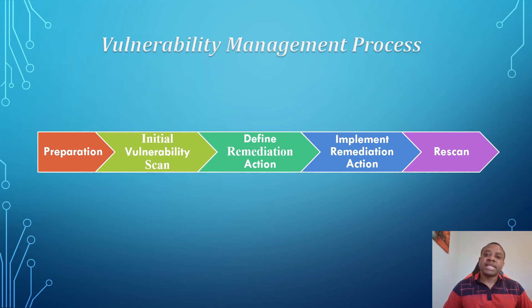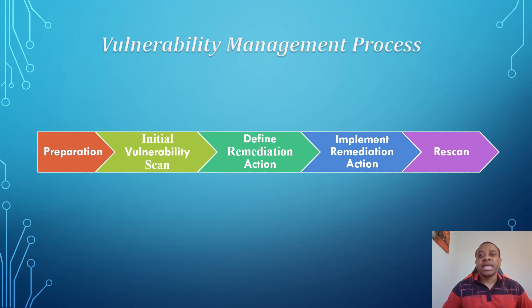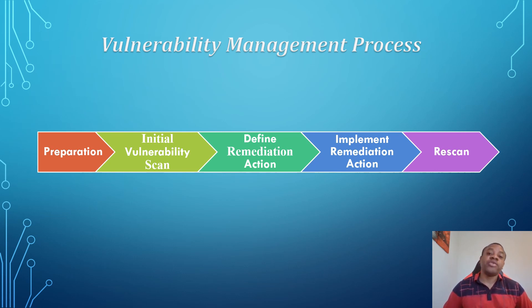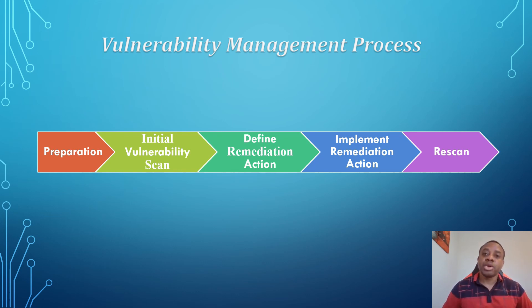On the vulnerability scan report, you may identify critical, high, moderate, and low impact vulnerabilities. Critical and high impact vulnerabilities are remediated first. A critical vulnerability should be remediated as soon as possible, or in less than 30 days. A high impact vulnerability should be remediated within 30 days. A moderate impact vulnerability should be remediated within 60 to 90 days depending on the organization's vulnerability management policy. A low impact vulnerability should be remediated within 180 days.